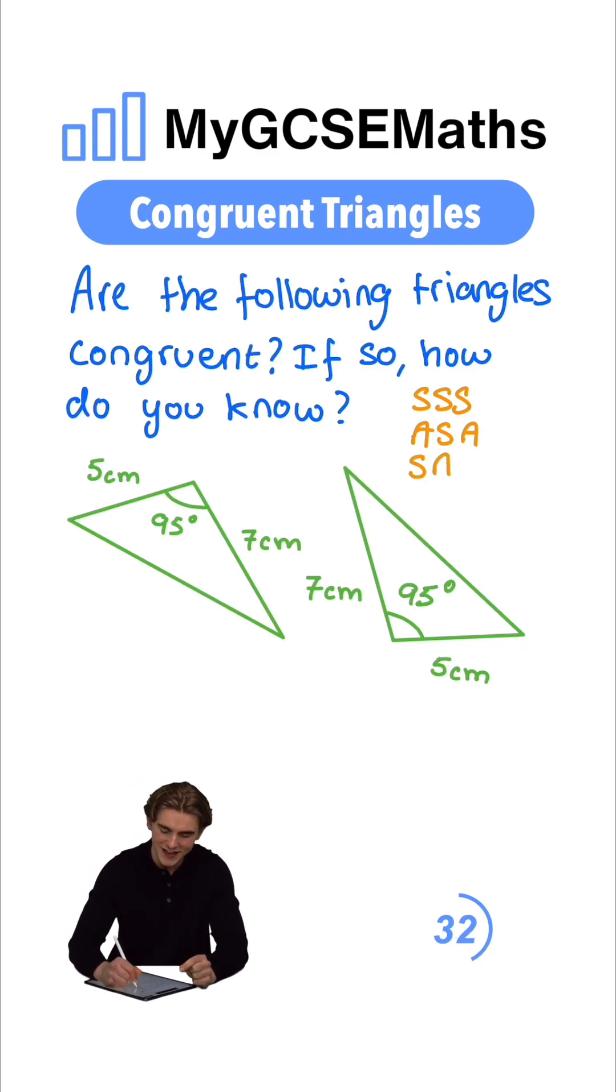Or we have SAS—side, angle, side—the same, but with two sides and an angle in between. And finally, we have right angle, hypotenuse, side as our final rule.